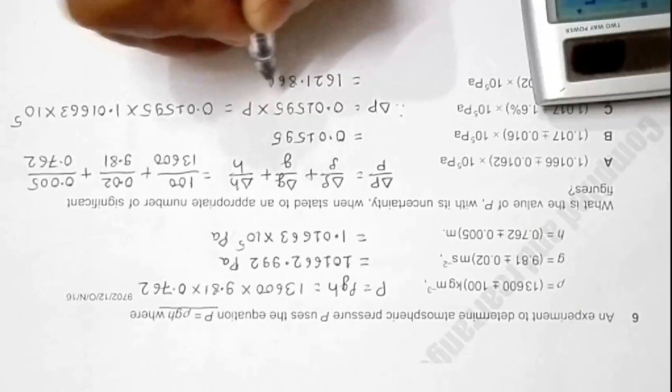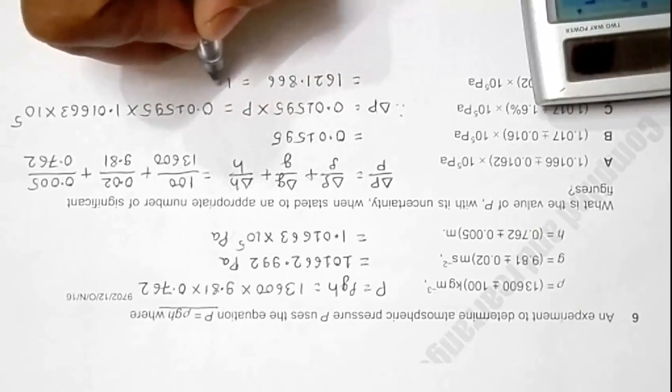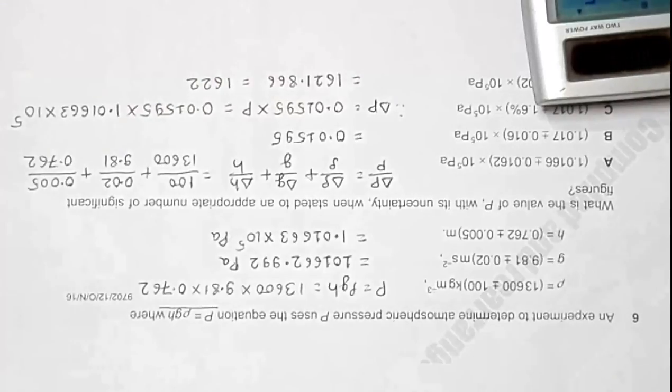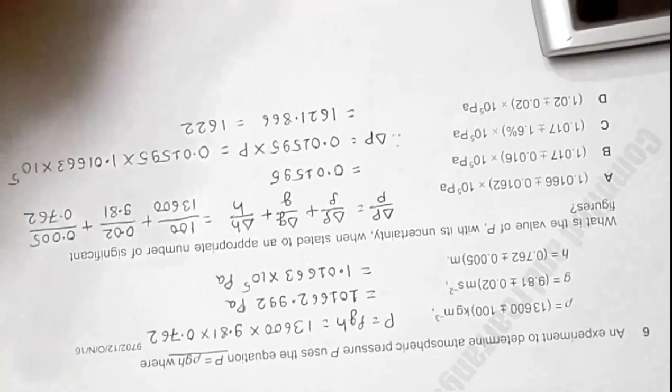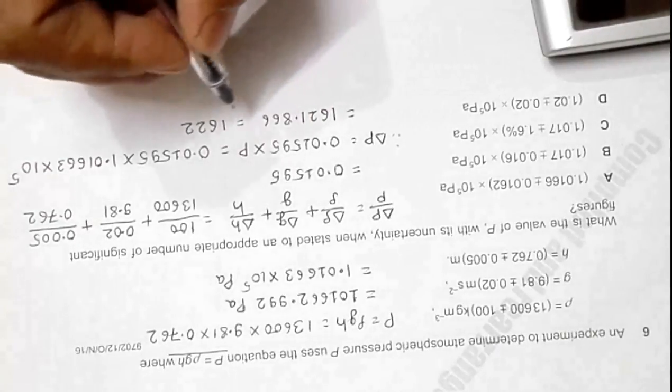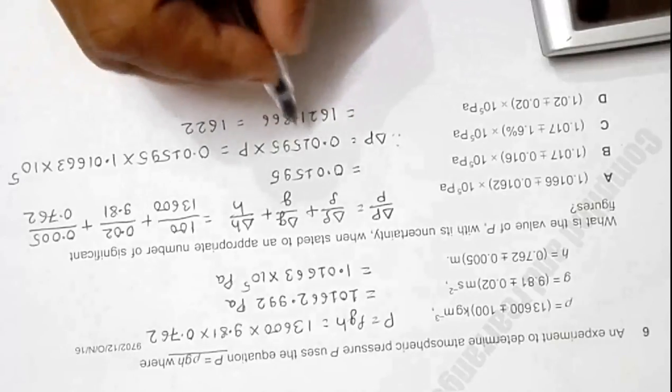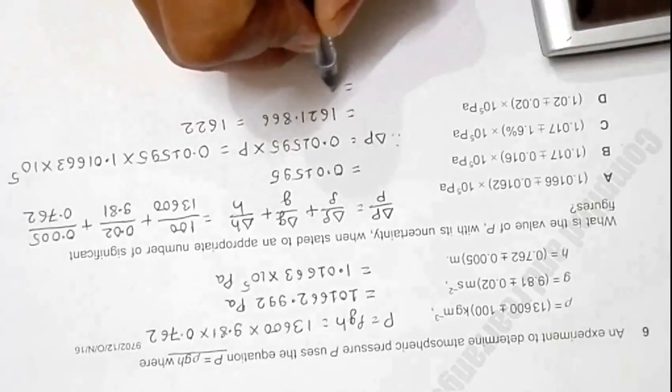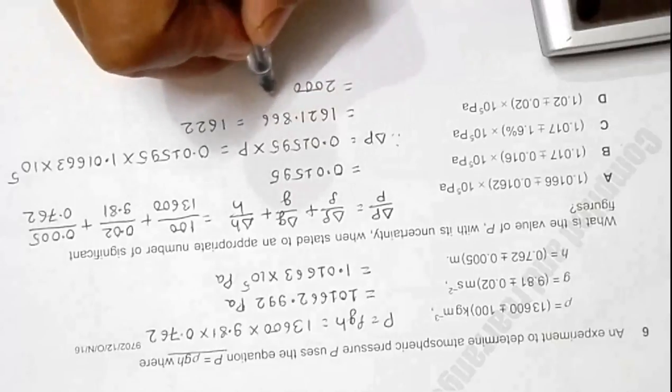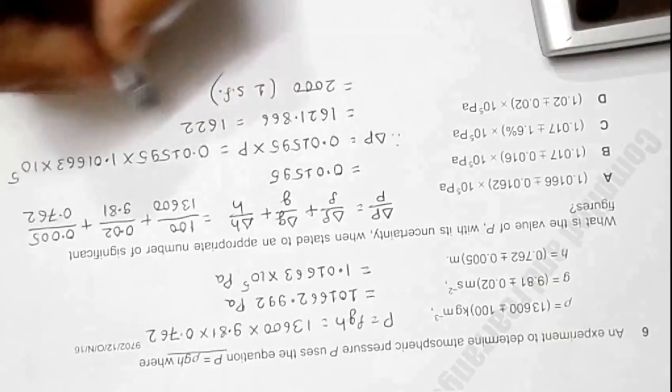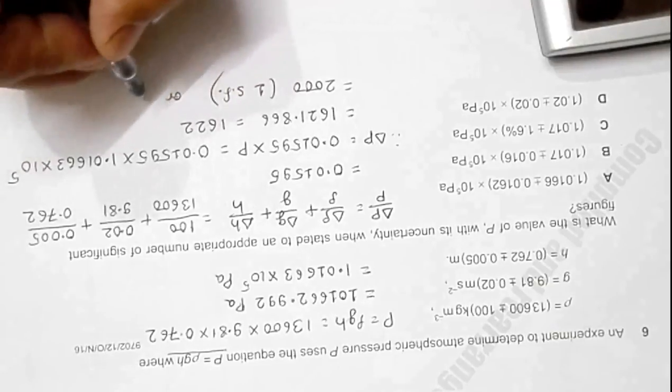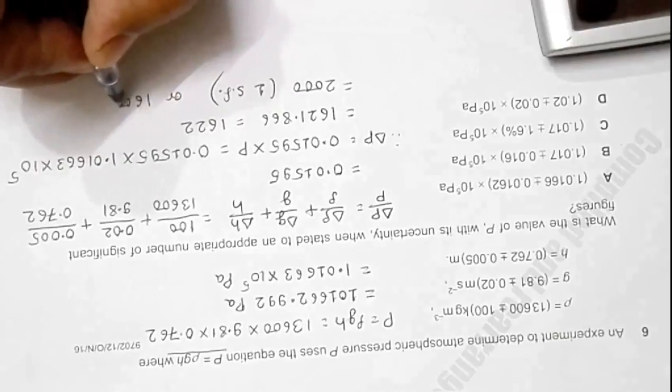That equals 1622. Now error should be in either 1 significant figure or 2 significant figures. If I use 1sf here, it should simply be equal to 2000. If I use 2sf, which is also allowed, it should be equal to 1600.